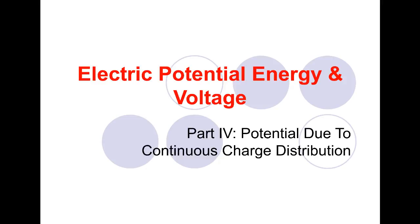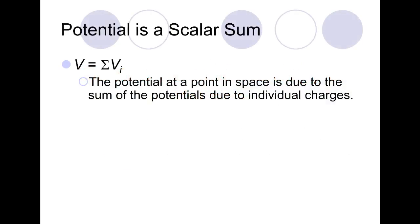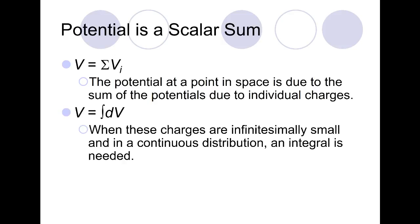Welcome back everyone. In this video we're going to continue our study of electric potential and we're going to be looking at how to calculate the potential due to a continuous charge distribution. This is going to be similar to when we did this for an electric field, but one thing that's going to help us is that potential is a scalar. That means the potential at one point in space is the sum of the potentials due to individual charges. If we can break extended objects up into pieces, we can use an integral to calculate the potential.